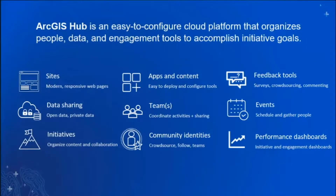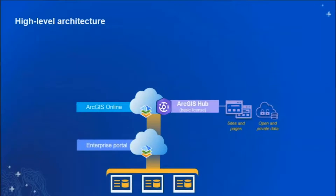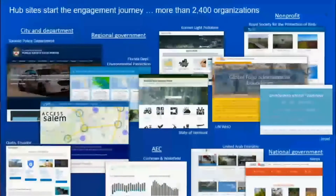Hub Basic really comes with the sites and data sharing capabilities. The basic license of ArcGIS Hub comes with ArcGIS Online, so many of you already have this ability. This allows you to make websites and pages and share your data, either openly with the public or keep it private to your organization.